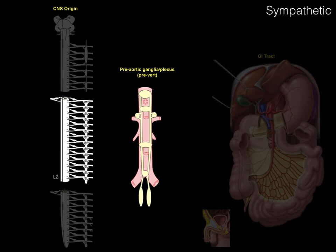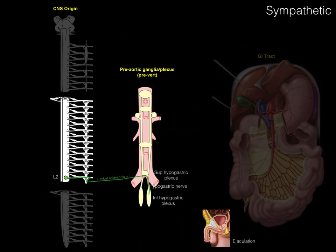For organs in the pelvis: any sympathetics going to the eye, penis, toe, or a sweat gland always arise between T1 and L2. In the abdominal pelvic region, a preganglionic sympathetic neuron arises from the lateral horn of the L2 spinal cord level, exits into the pre-vertebral plexus, and descends to the inferior hypogastric plexus — called a lumbar splanchnic because it comes off a lumbar nerve. It synapses there, and the inferior hypogastric plexus sends fibers to the penis to cause ejaculation. The key is always getting from the CNS origin, T5 to L2 for abdominal pelvic organs, to the pre-aortic ganglia, and then following blood vessels to the target organ.